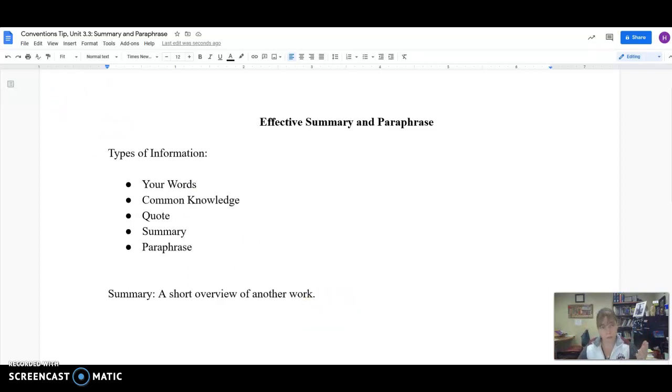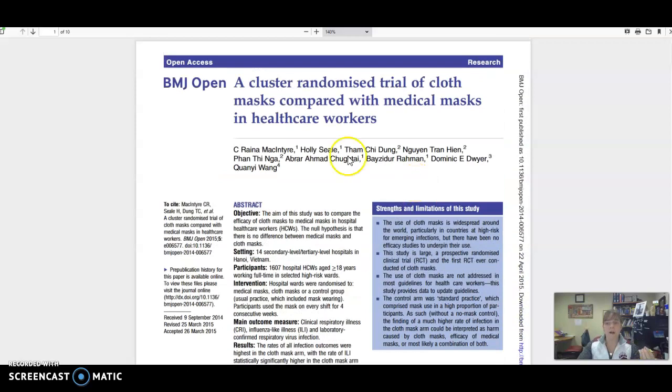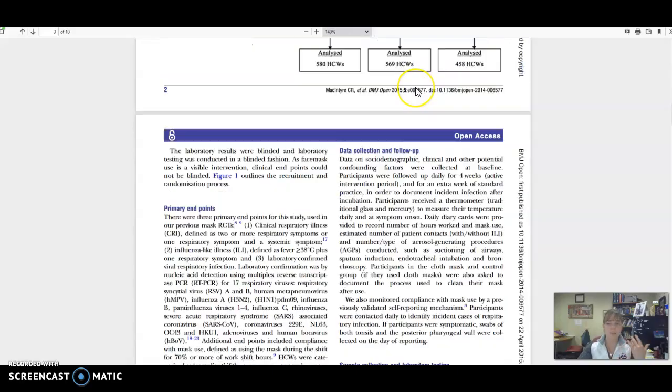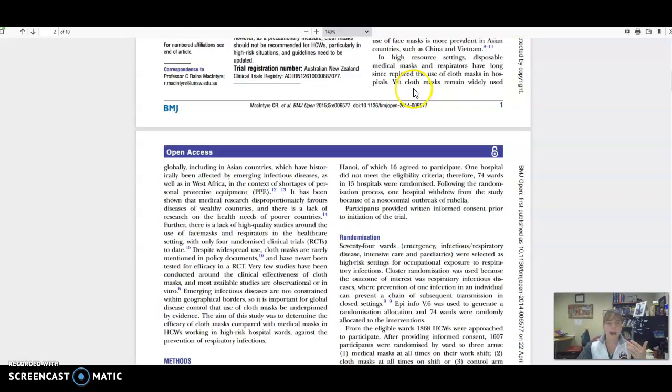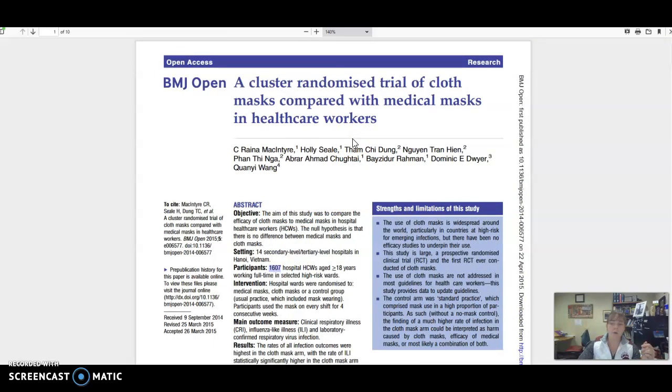In the realm of a research paper, sometimes summary is incredibly useful. For instance, maybe I don't want a lot of information from this particular study, but I do want to summarize the findings of this study for my reader. So instead of going through and explaining the whole study process and giving the exact statistics of what they learned, I'm going to say that these individuals studied 1,607 hospital workers in Vietnam who wore medical masks or cloth masks or some mix of both and found that those who wore cloth masks had a higher chance of being infected with a respiratory illness than those who did not.